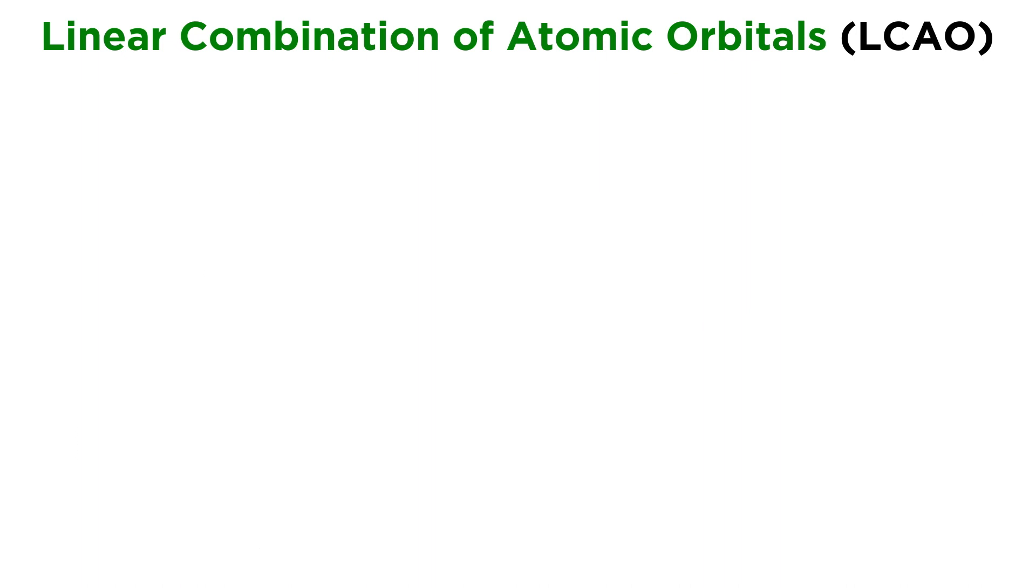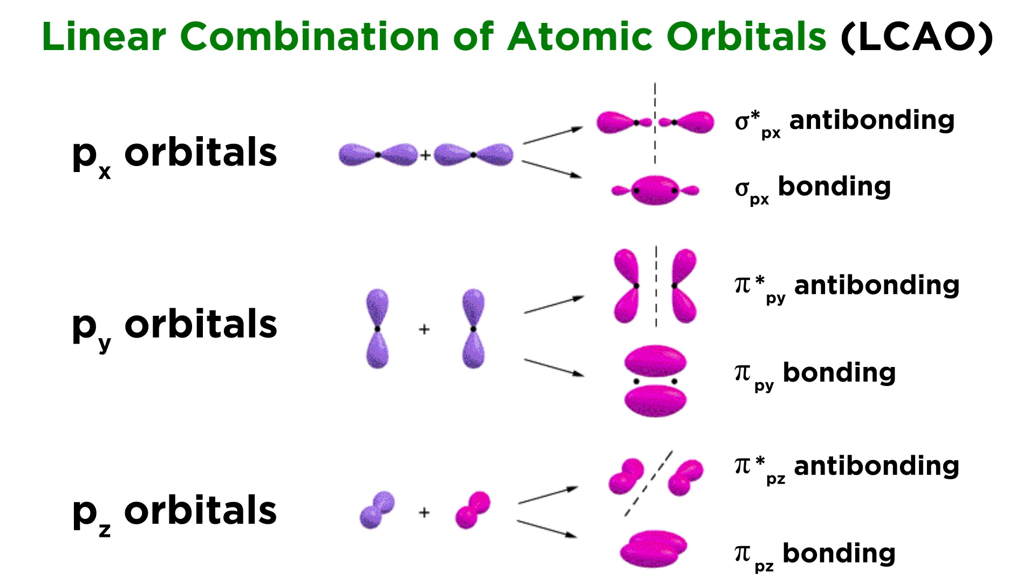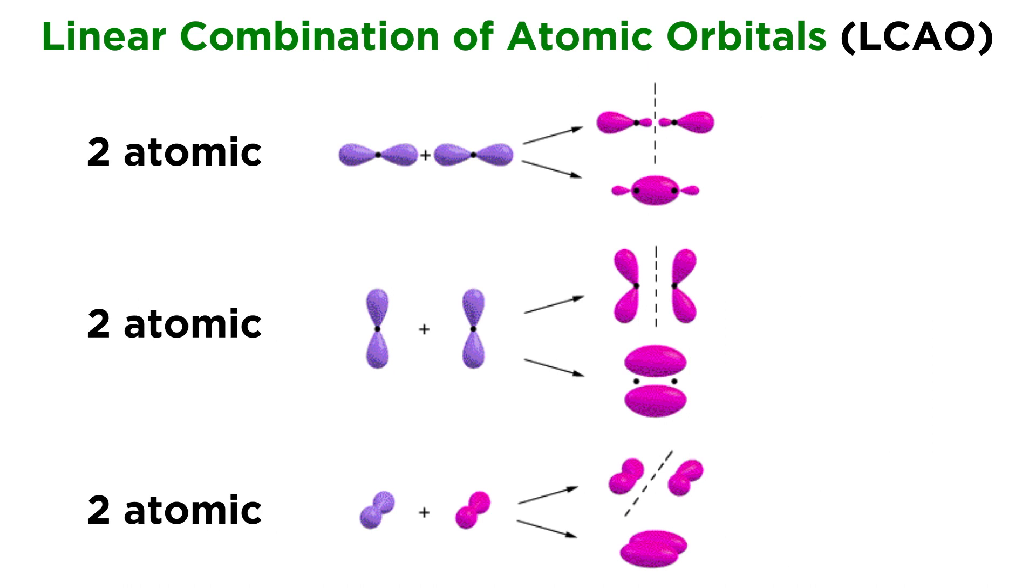We can do the same thing with p orbitals, utilizing direct overlap, which will yield sigma px and px star molecular orbitals, or lateral overlap, yielding pi and pi star molecular orbitals from the overlap of py and pz atomic orbitals. Orbital number is always conserved, which is why the linear combination of two atomic orbitals will always result in two molecular orbitals, one bonding and the other antibonding.